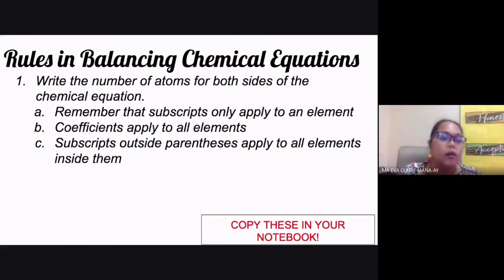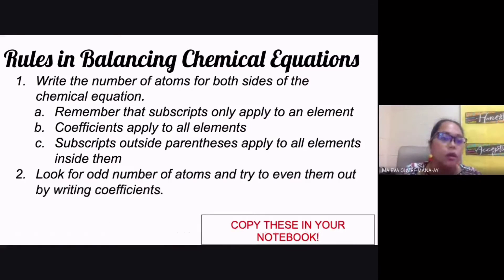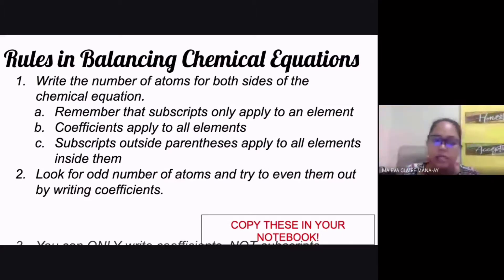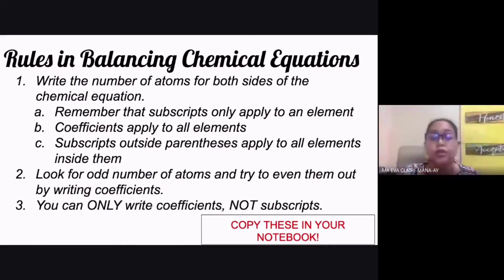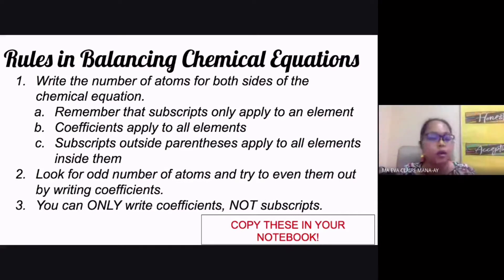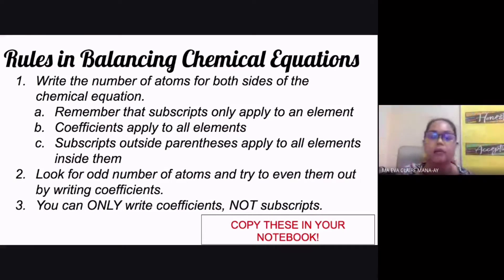Rule number two: look for odd number of atoms and try to even them out by writing coefficients. Rule number three — very important — you can only write coefficients, not subscripts. You can only write that number before your chemical compound, not those little numbers at the bottom.